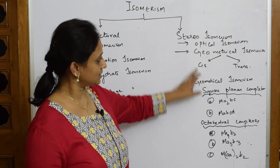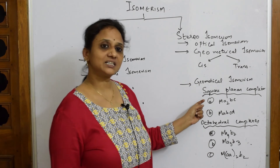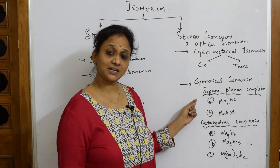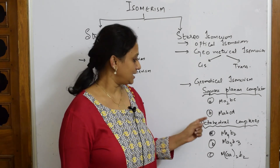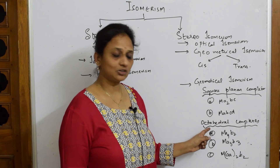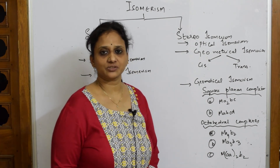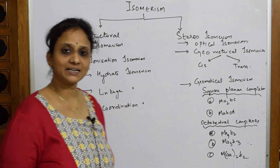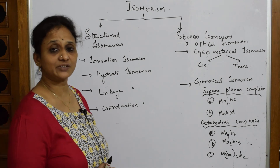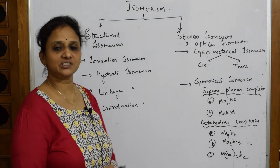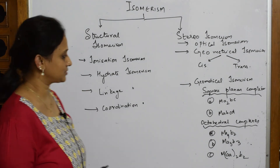Geometrical isomerism has one more variety — we are going to study it in square planar complexes under two headings, and octahedral complexes under three headings. I'll be showing you the structures. So let's come back and learn one after the other. This topic is very important — please try to concentrate when I'm drawing the structures.